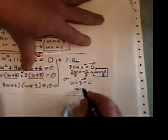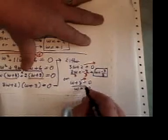This bracket is easier to solve. Just take the 3 to the other side and that gives you w equals negative 3.